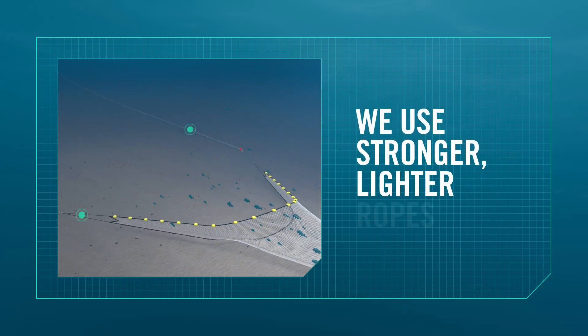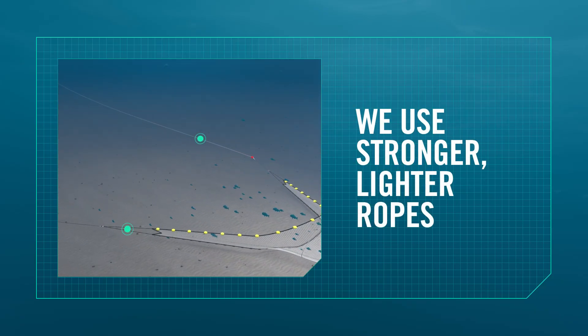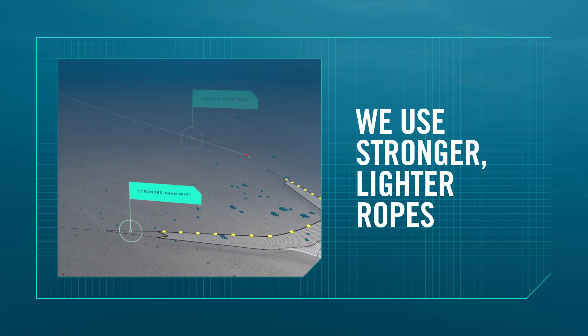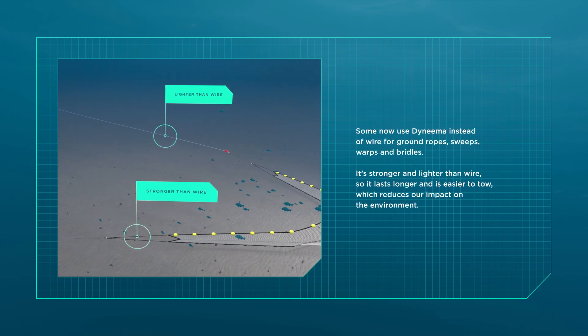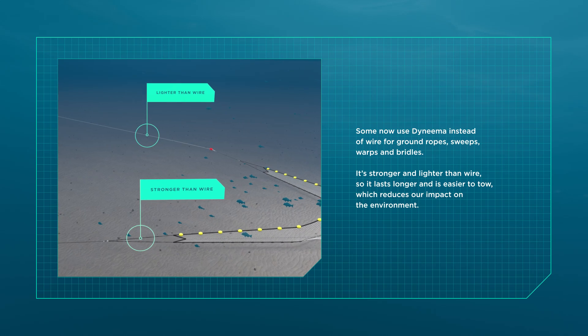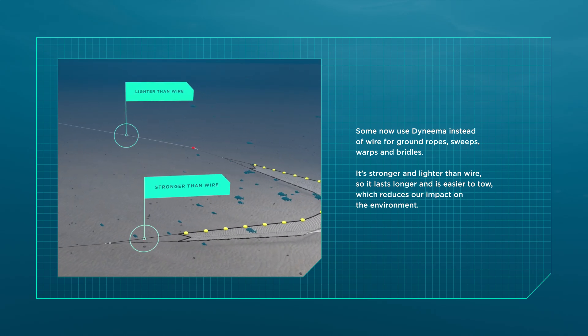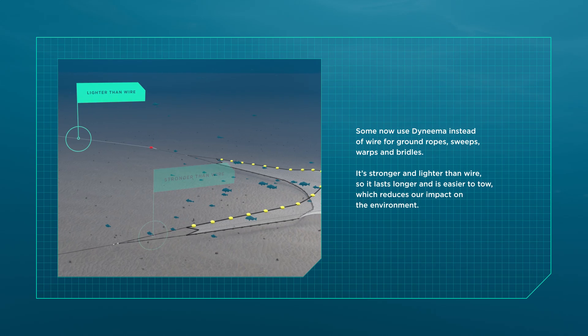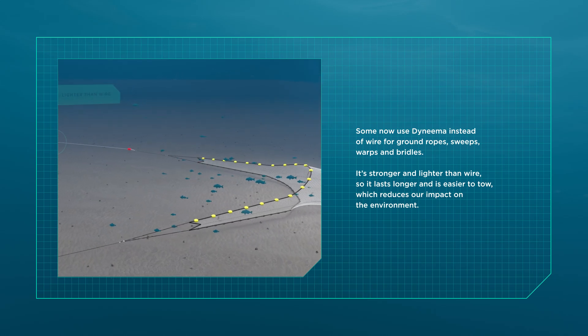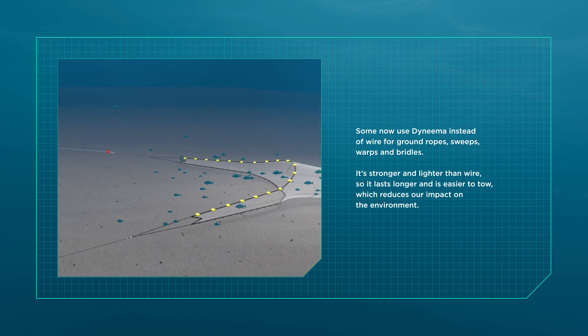The material we use for our ropes has also been updated to be stronger and lighter. Some now use Dyneema instead of wire for ground ropes, sweeps and bridles. It's stronger and lighter than wire, so it lasts longer and is easier to tow, both of which contribute to our reduced impact on the environment.